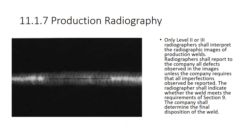For production radiography, only Level 2 or Level 3 radiographers shall interpret radiographic images of production welds — a CWI or visual inspector cannot interpret x-rays, and Level 1 radiographers cannot either. Radiographers shall report to the company all defects observed in the images, unless the company requires that all imperfections be reported. The radiographer shall indicate whether the weld meets the requirements of Section 9, and the company shall determine the final disposition of the weld.